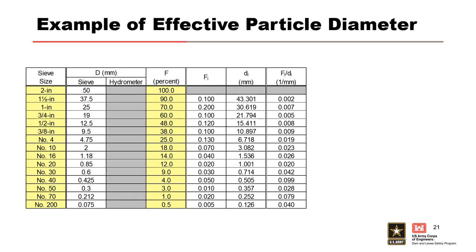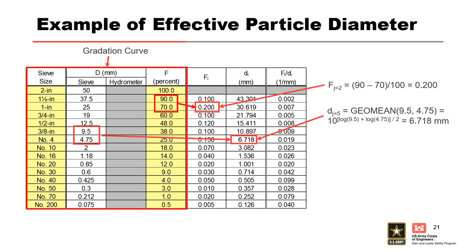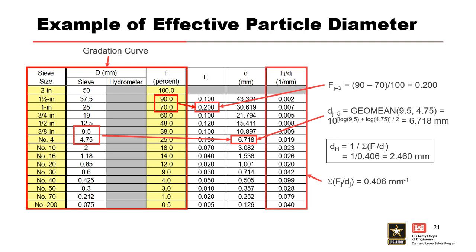This slide shows a simple example of how to calculate effective particle diameter for a given gradation curve. The first four columns are the cumulative particle size curve. The fifth column obtains the fraction within each particle size increment. The sixth column obtains the average particle size for each increment using a logarithmic scale. The seventh column obtains the ratio of the fifth and sixth columns, which is then summed. The effective particle diameter is the reciprocal of that sum.